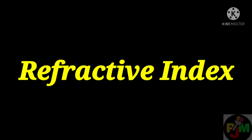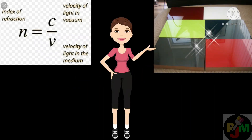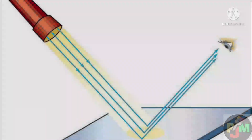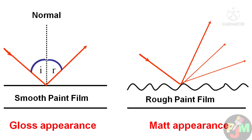Refractive index: paint based on medium or high refractive index will give a higher specular reflection value. For a fixed angle of incidence with respect to normal, intensity of reflected light increases as the refractive index increases, that is gloss increases, and vice versa.